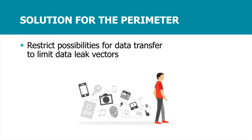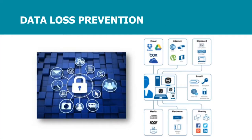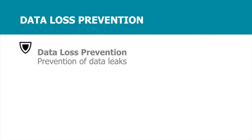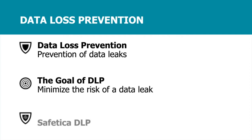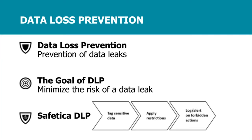The ultimate solution is Data Loss Prevention (DLP), which helps you enforce these rules in practice and ensures people use only secure channels for transferring data. The most widely used approach is an educational regime — tools that warn employees when they are doing something risky or unwanted. DLP minimizes the risk of data leaks, and the way we do it is by tagging sensitive data and marking it so the system knows how it should be handled.